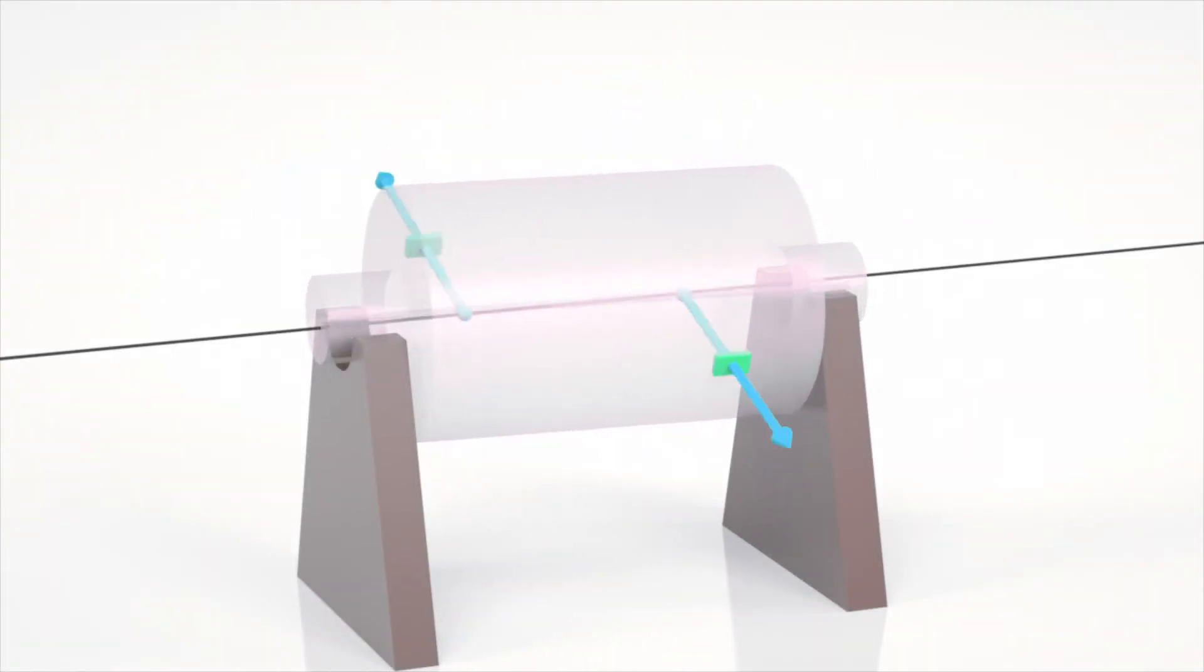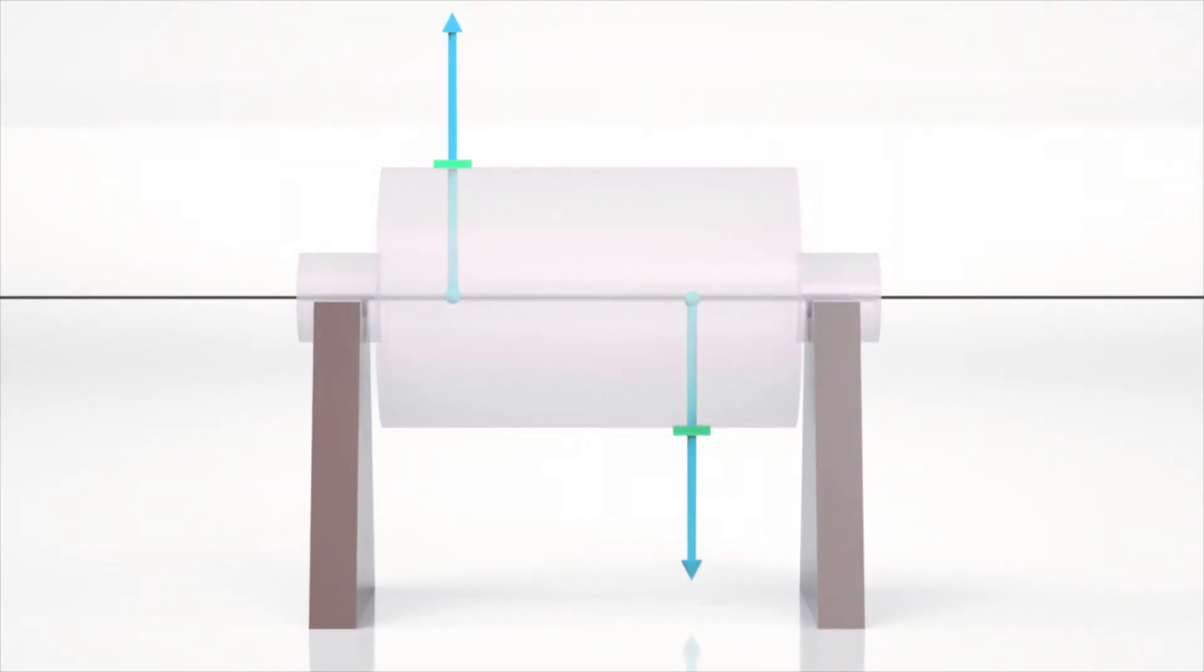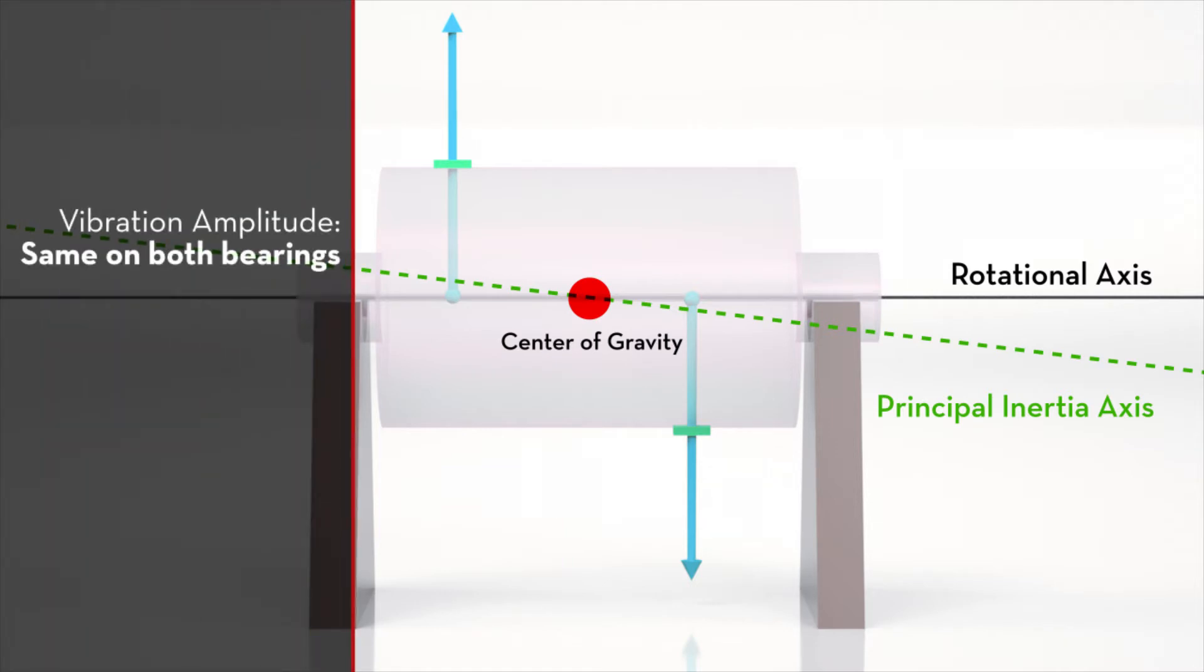Couple unbalance occurs when the principal inertia axis is displaced from the rotational axis and the axes intersect at the center of gravity. The two axes are not parallel. The rotor is statically balanced. The vibration amplitude will be the same on both bearings. The phase angles will be 180 degrees different.